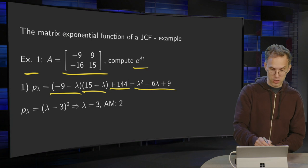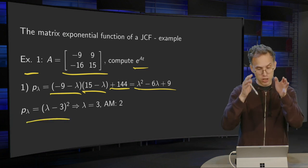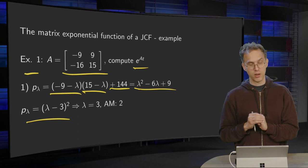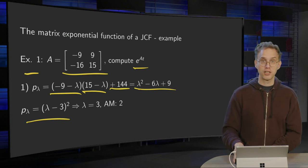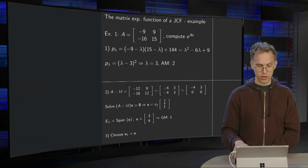Setting p lambda to 0 we get lambda minus 3 squared equals 0. So we have one eigenvalue lambda equals 3. That's algebraic multiplicity 2. That's the first step.